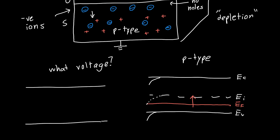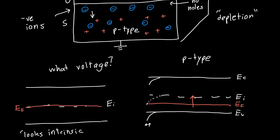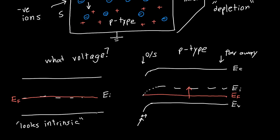At the very edge of the semiconductor — ignoring the slanting for illustration purposes — we want the Fermi level to be exactly equal to, or very close to, the intrinsic Fermi level. That means this semiconductor now looks intrinsic near the interface. It was p-type, but we applied a voltage such that the Fermi level is right on top of the intrinsic Fermi level at the oxide-semiconductor interface.